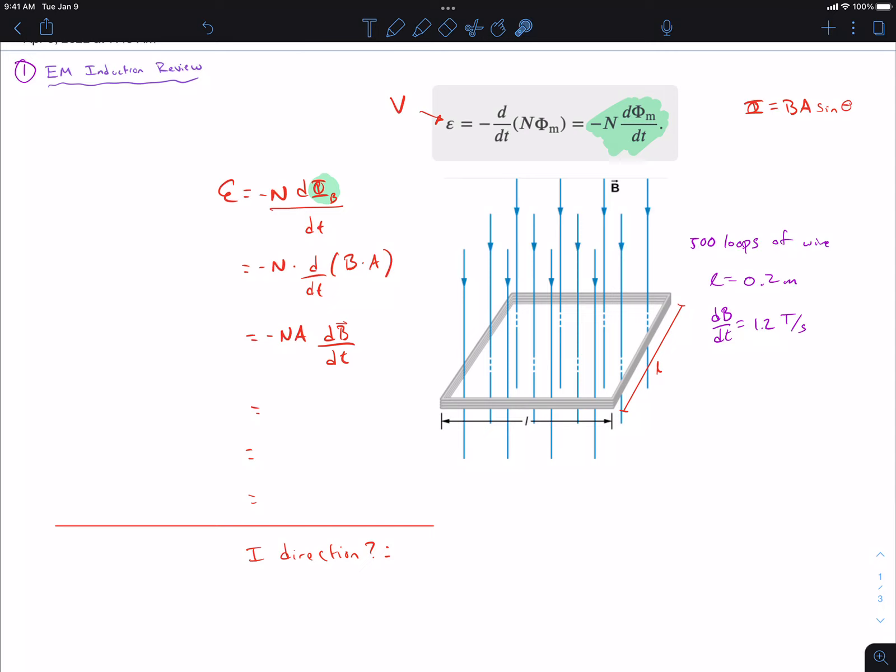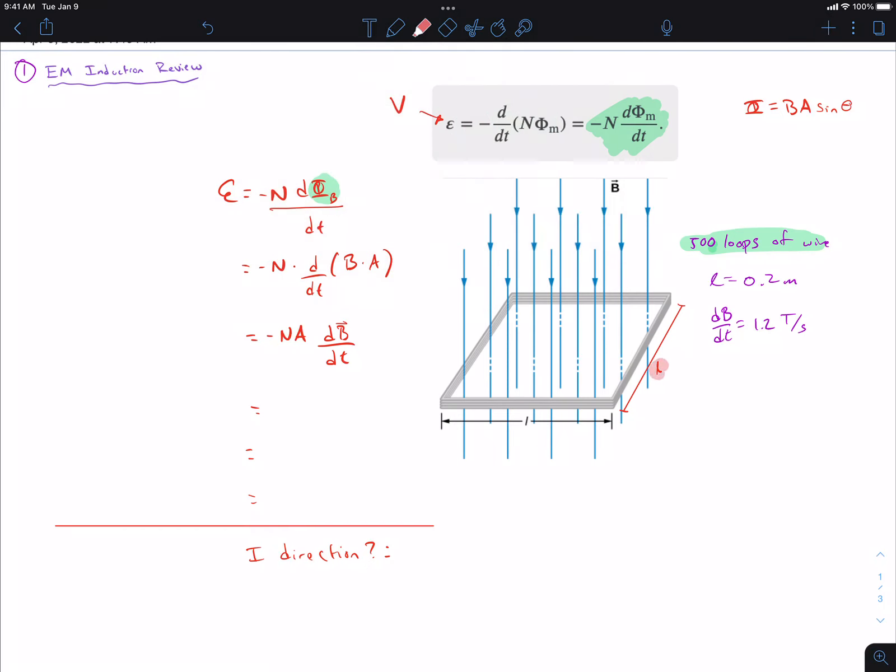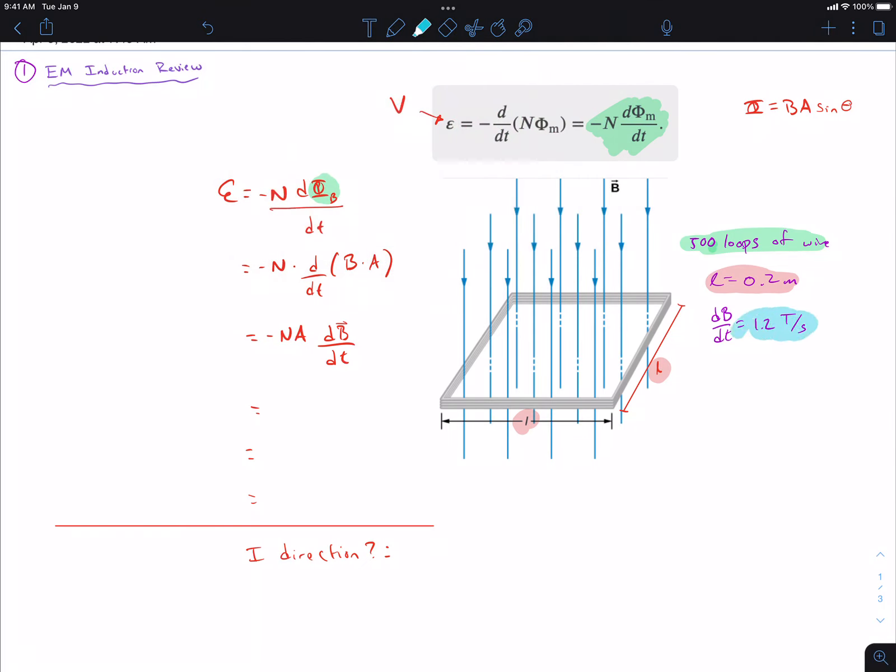So let's say that I have 500 loops of wire, right here in a square coil shape. Let's say it's a square, so both the length and the width are both 0.2. And then what I'm going to do through this coil of wire is I'm actually going to increase the magnitude of this magnetic field over time by 1.2 tesla per second. So every second, my magnetic field is going to increase by 1.2 tesla per second.